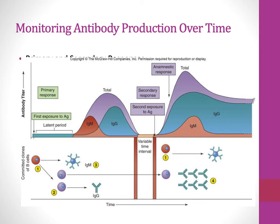Hopefully the IgG response clears the infection. If you're exposed to the antigen again, in the second response — because you have memory cells — the IgG response is much stronger and much quicker, without that latent period. It's not like the immune system is waiting around; because we have the memory population, B cells and T cells are able to respond much quicker. We've already undergone class switching, so memory cells will be producing IgGs.